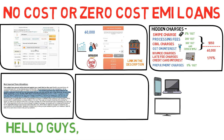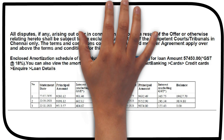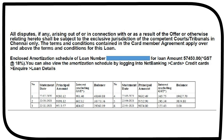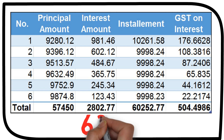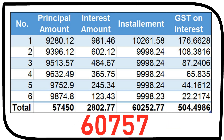Now let me share the amortization table — it is a 6-month EMI breakup of principal and interest. If we put that in an Excel and charge 18% on the total interest amount, we can calculate the effective amount, that is 60,252.77 plus 504.49, which equals 60,757.26. So effectively, one would end up paying more than with the one-go payment option. However, we can't deny the fact that it gives the consumer the comfort to buy the product or satisfy the need without paying the full amount upfront.